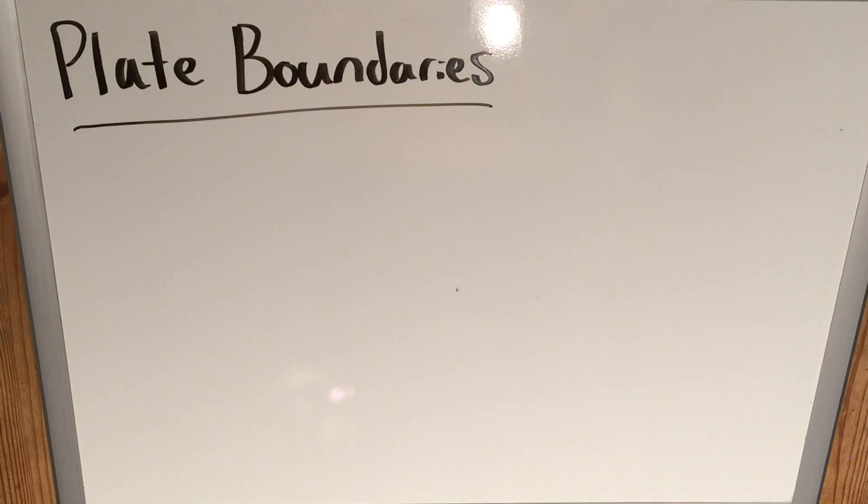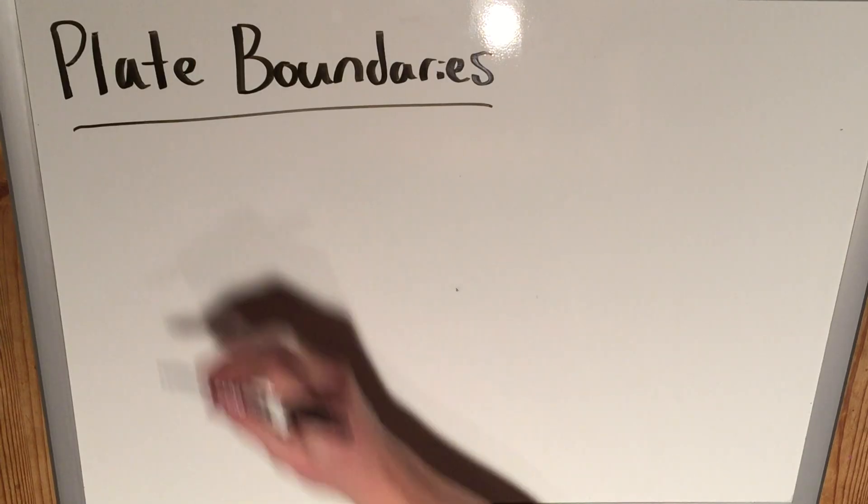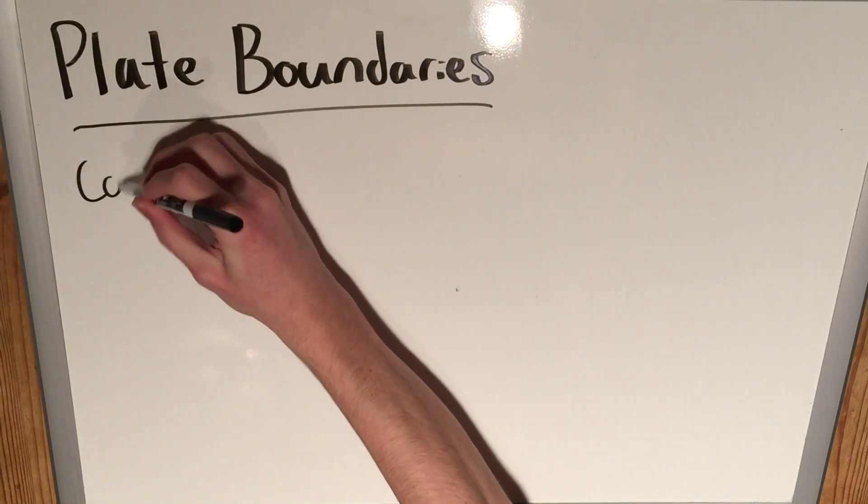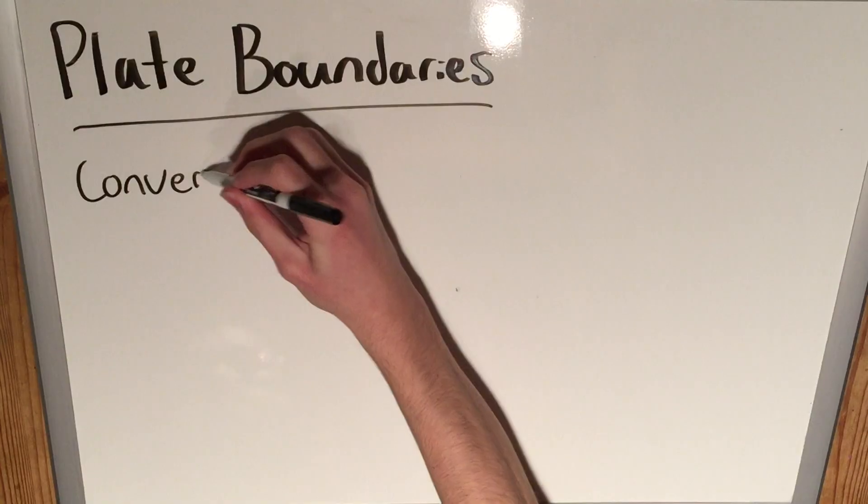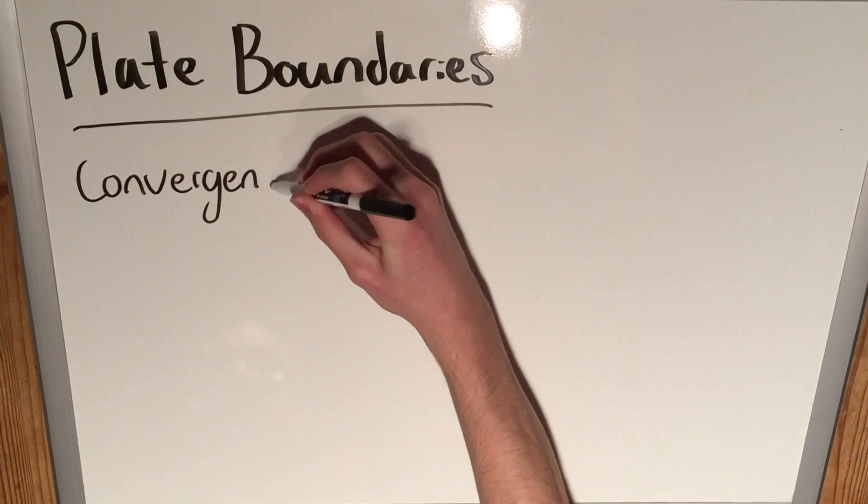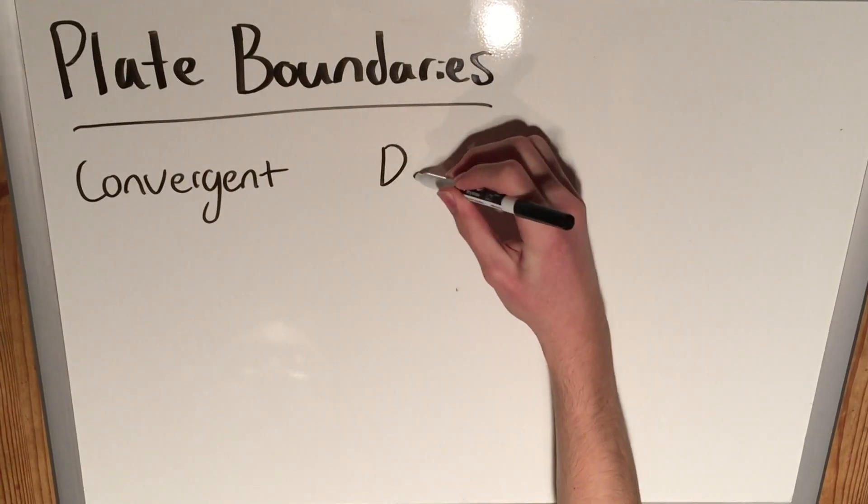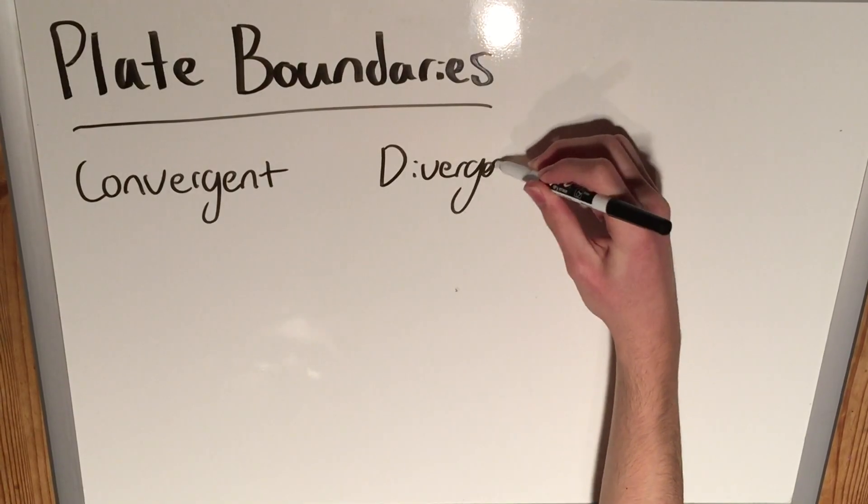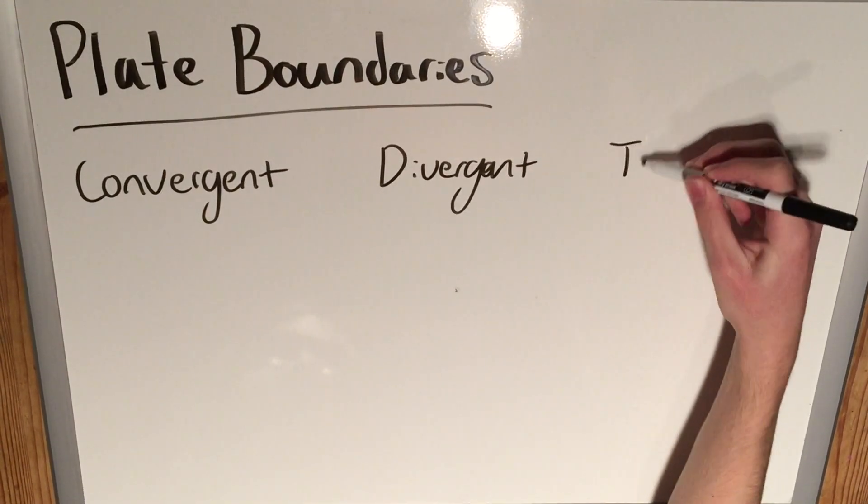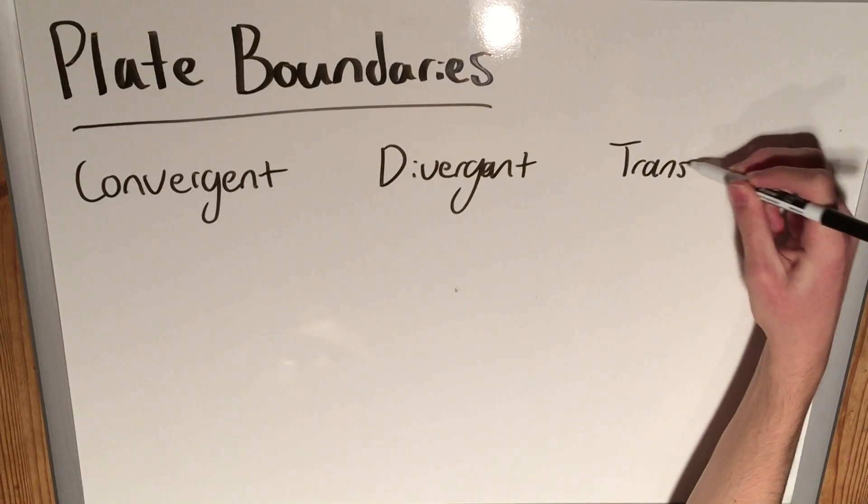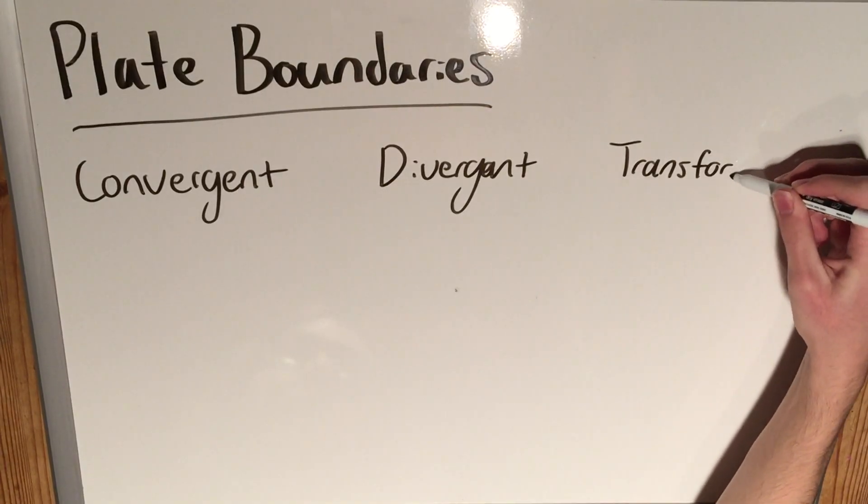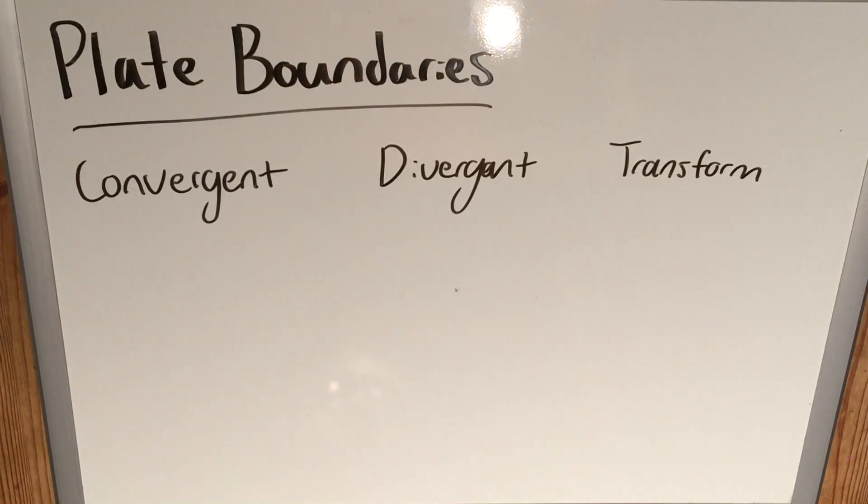Okay, so this will most likely come as a review to most of you, but there are three basic types of plate boundaries. We have our convergent, our divergent, and lastly our transform. Now in terms of plate movement, the names really do speak for themselves.